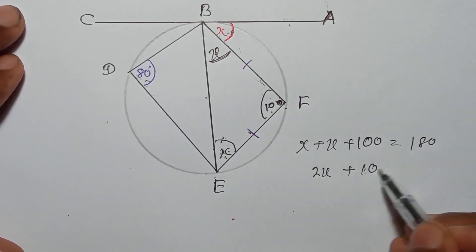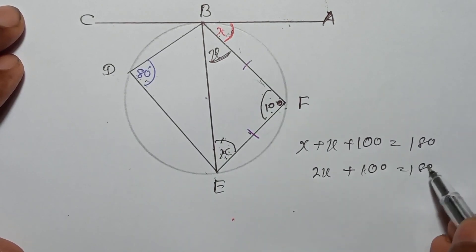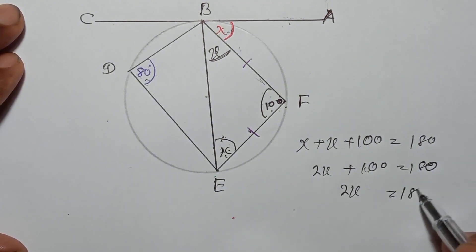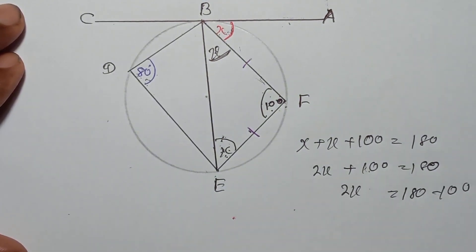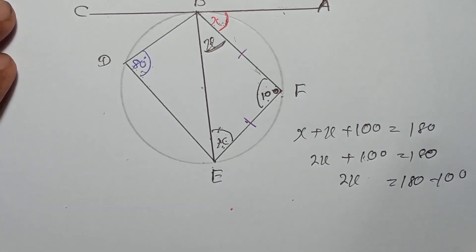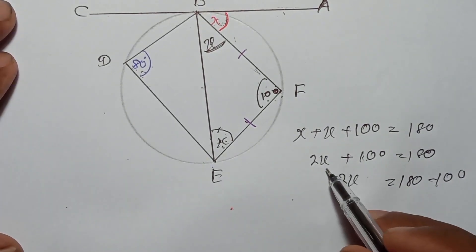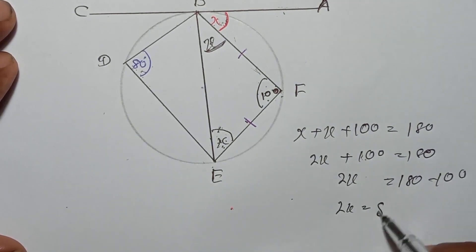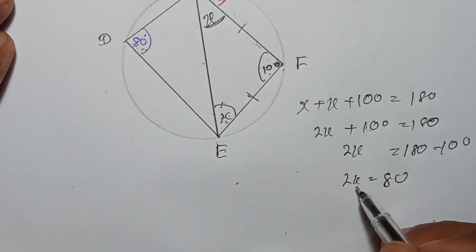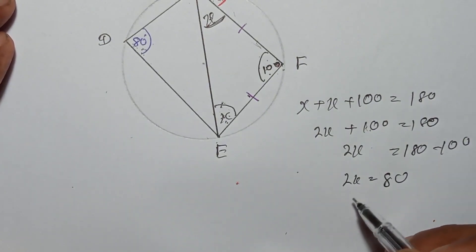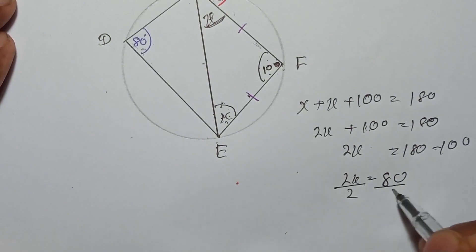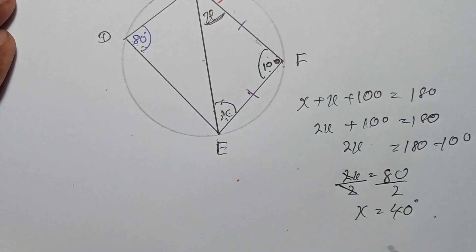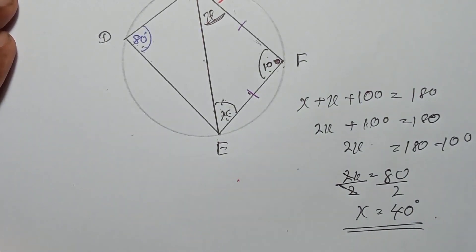So 2x plus 100 equals 180. Bring 100 to the other side: 2x equals 180 minus 100, which is 80. Divide both sides by 2: x equals 40 degrees. So the value of x is 40 degrees.